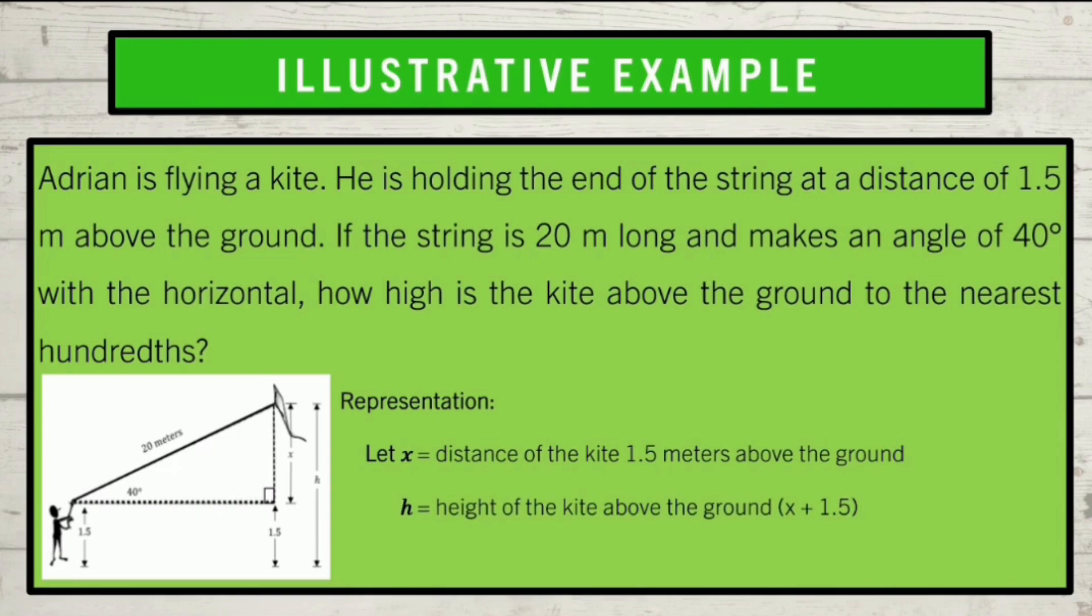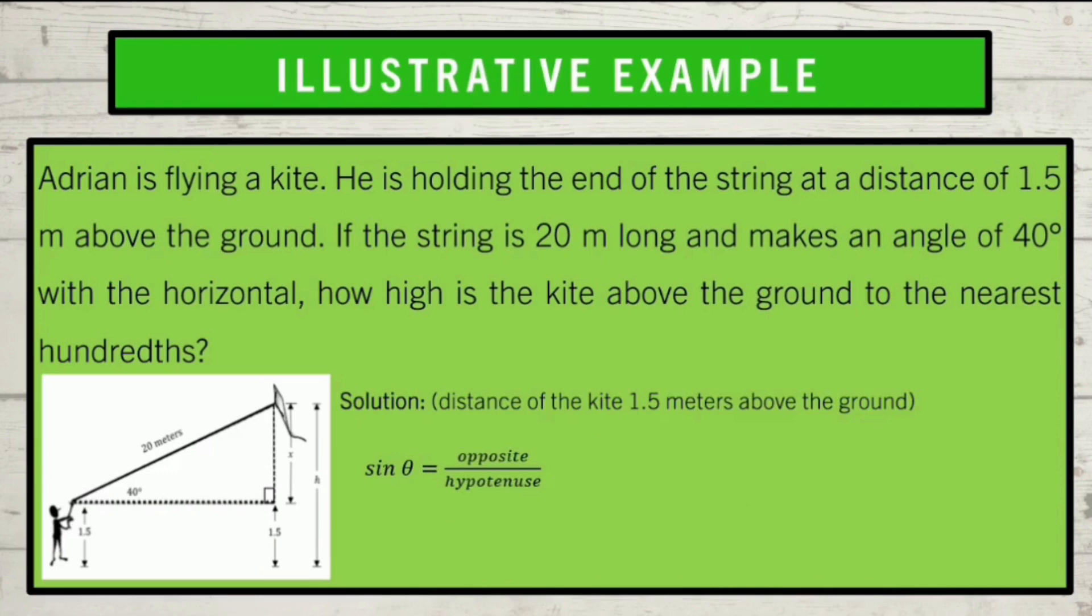Now, with the given values, what do you think is the primary trigonometric ratio that you are going to use to solve the problem? Perfect! Since we have the opposite side and the hypotenuse, we are going to use the sine ratio. What is the equation or formula to be used? Very good! The formula to use is sine theta equals the opposite side over the hypotenuse.